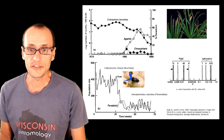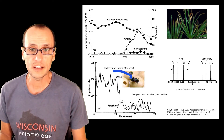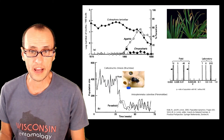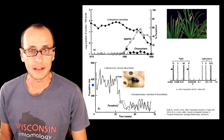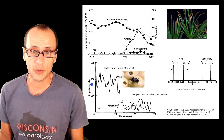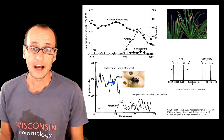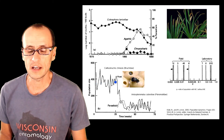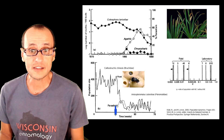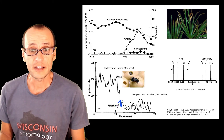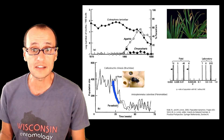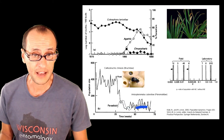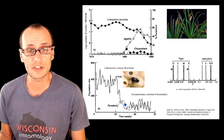Here's a classic study of this particular weevil — a bruchid — that feeds in the seeds of legumes. It's a very important stored grains pest. This was a laboratory study where the population size was quite high for a period of time, fluctuating around some kind of high average that was economically damaging. Upon the release of a parasitoid into these chambers, the parasitoid increased in abundance, which was associated with a very rapid decline and a different equilibrium of the pest after the introduction of this parasitoid.